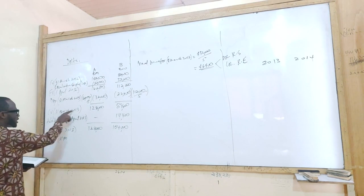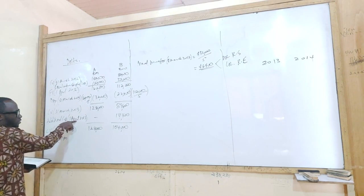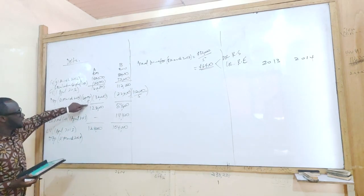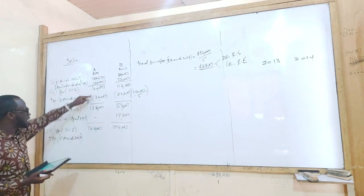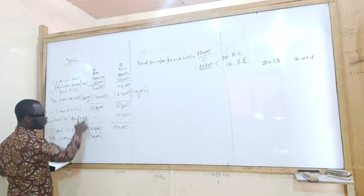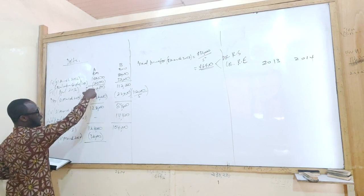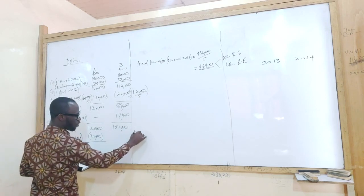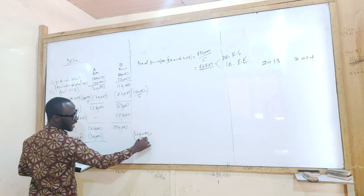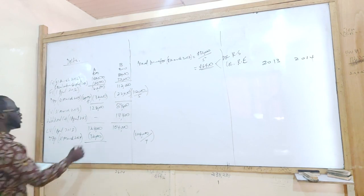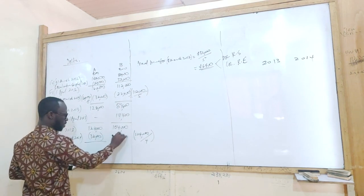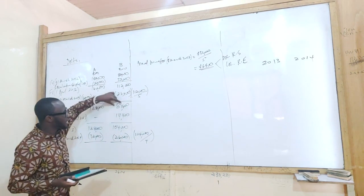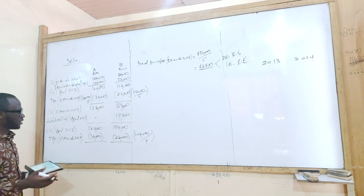On 31st March 2014, what is the depreciation? The depreciation for A is the same figure of 32,000 on the straight-line basis. For B, since additional cost was added on 1st April 2013, we depreciate the restated amount over the remaining life. One thing to note: this additional cost will be depreciated over the remaining life of the asset. So the carrying value as of 31st March 2014 for A is 96,000.